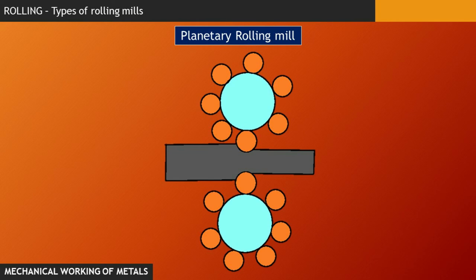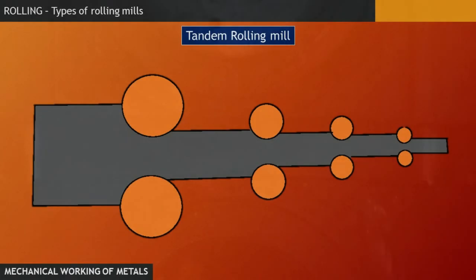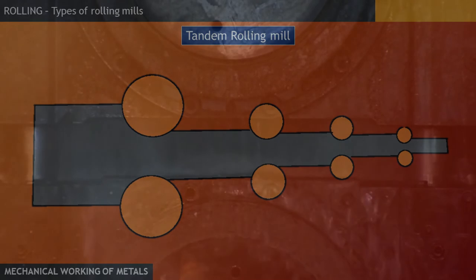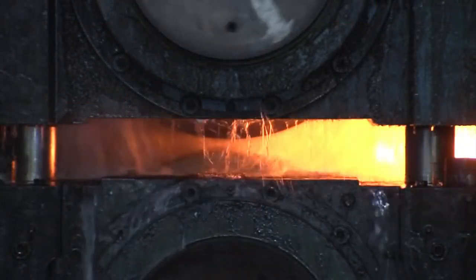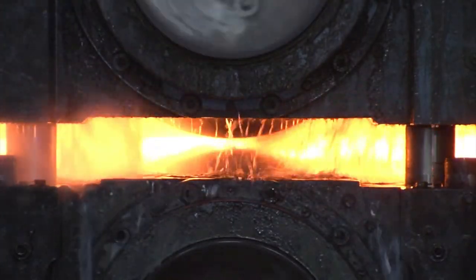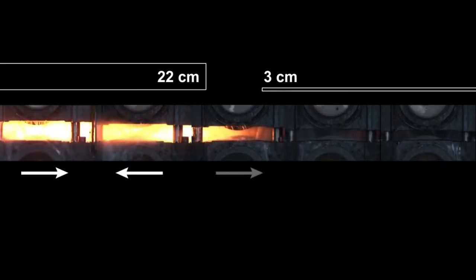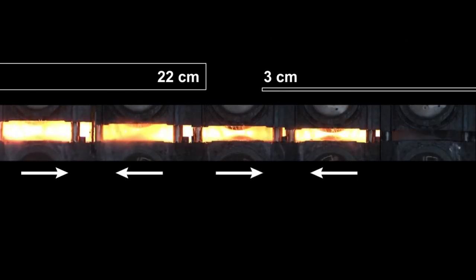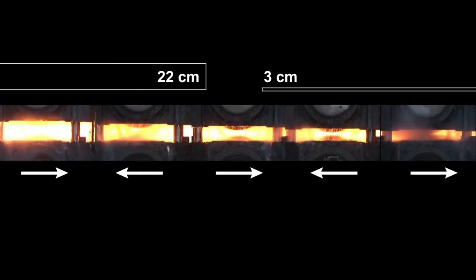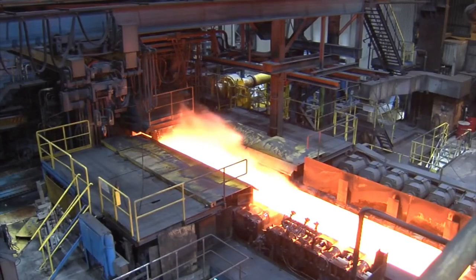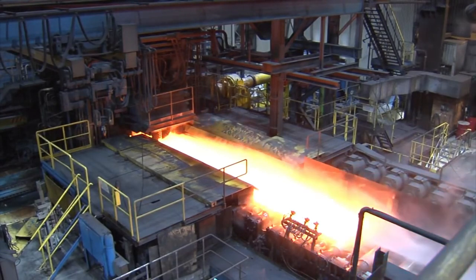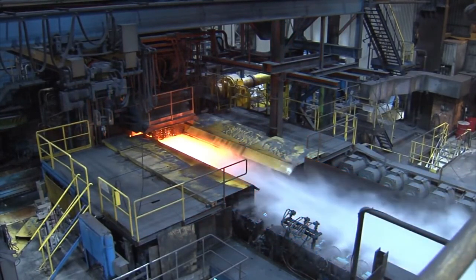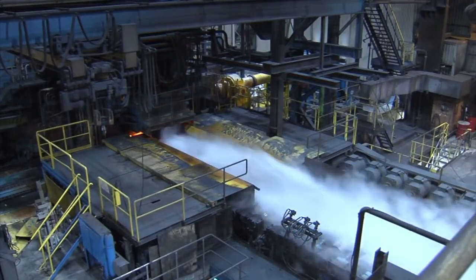And last but not least, we have tandem rolling mill, where successive reduction of the size of the work material can be accomplished. Initially, the work material enters a big rolling stand, a big stand having big rollers, and gradually the size of the rolls gets smaller. And the size of the work material as well.